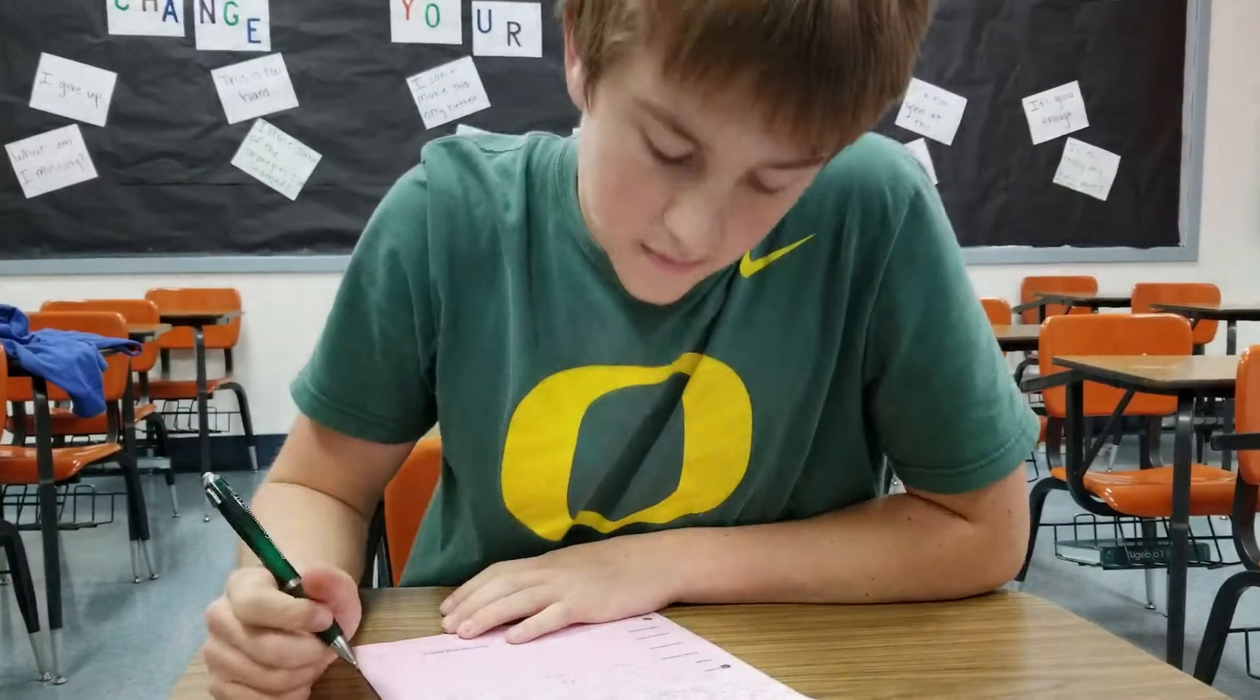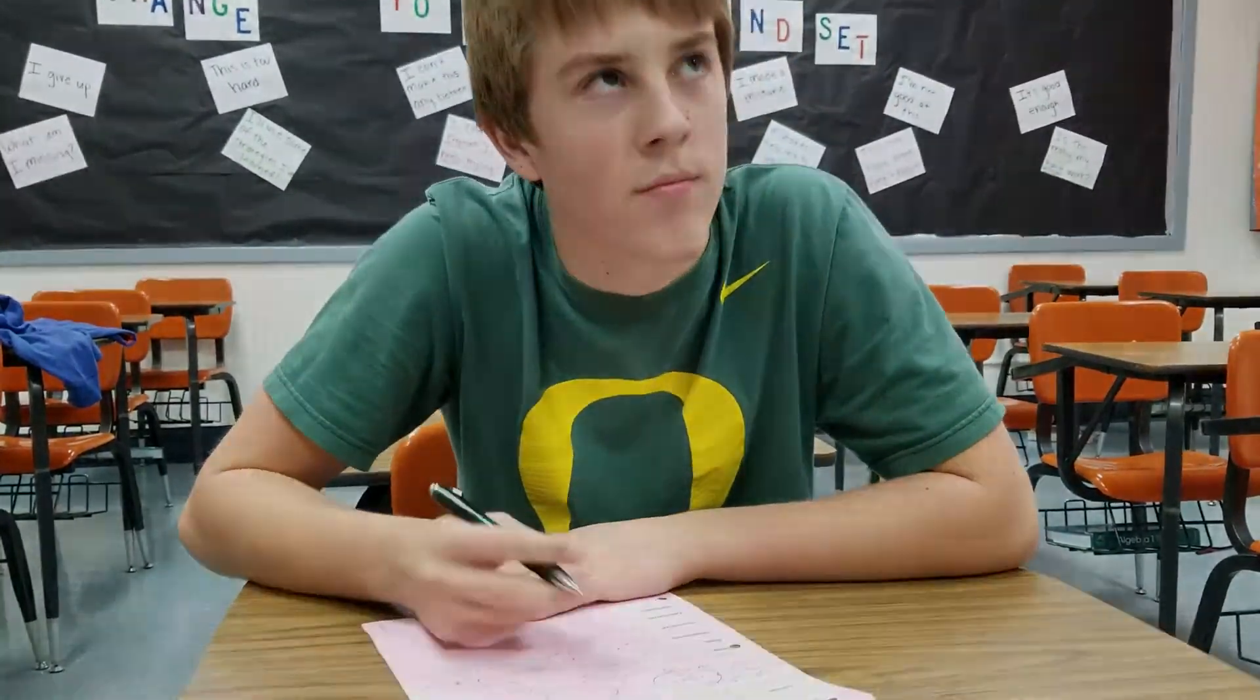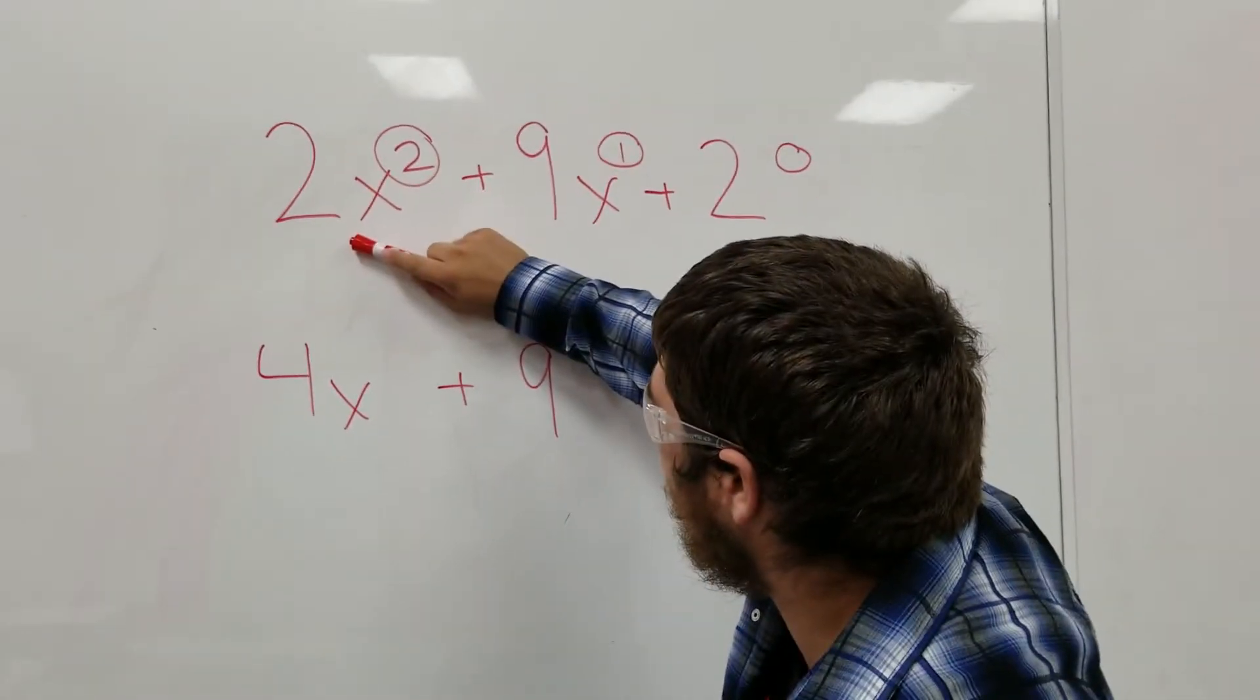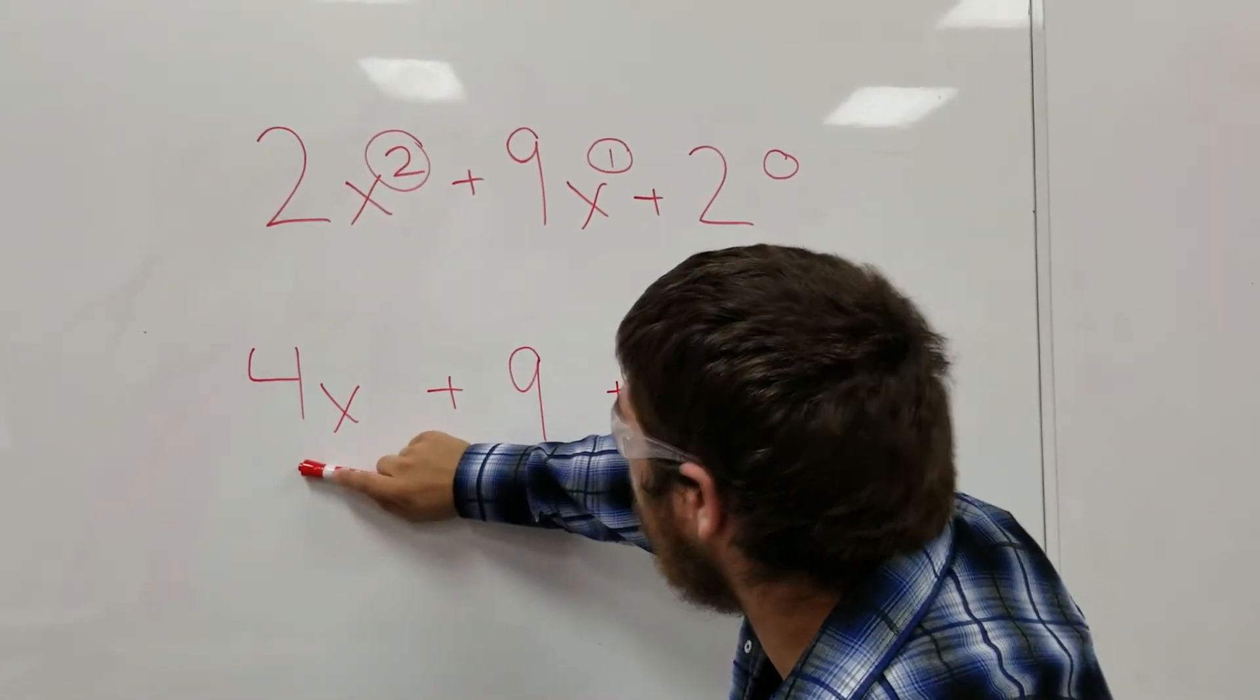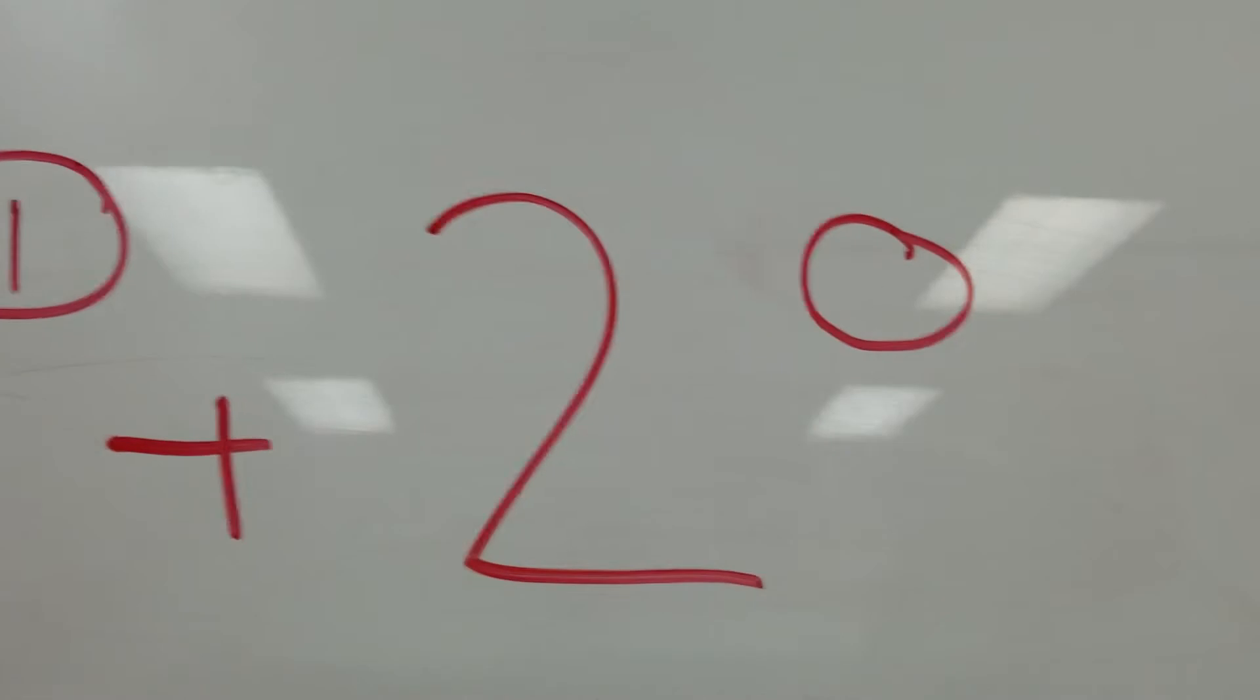Derivatives be scary, but they also pretty easy. Just multiply the power by the number in front there. Raise the power minus one, then the power rule's done.